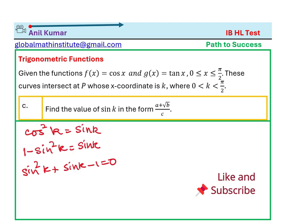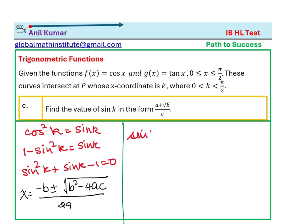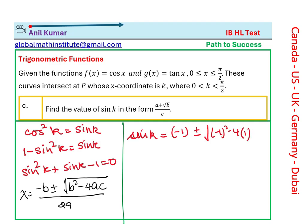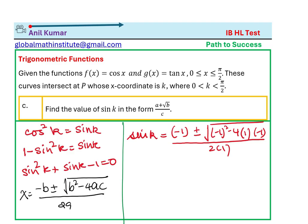So we'll use the formula of quadratic equation where we know that x equals... we'll use this quadratic formula. So in this case x is sin k. So sin k equals, b is 1, so it's -1 plus or minus b², which is (-1)², minus 4 times a is 1 and c is -1. So we get over 2a, over 2 times 1.